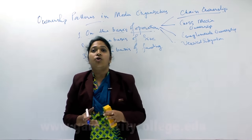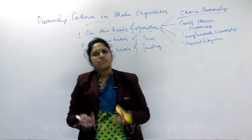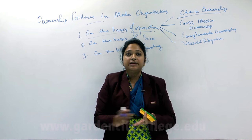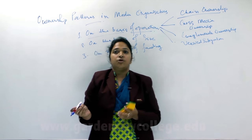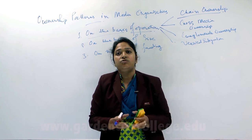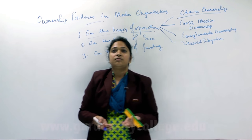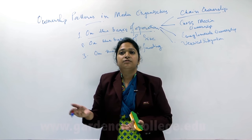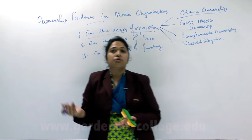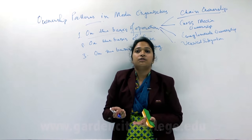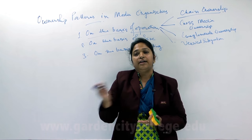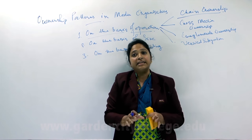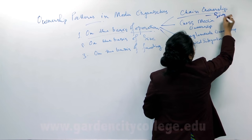In terms of the chain ownership pattern, one owner actually ends up owning a series of newspapers, radio stations, or televisions, and they confine themselves to a single media type. So if someone is into the newspaper business, they will expand their business by purchasing more and more newspapers, but they will not go and purchase a television or a radio station. They confine themselves to a single media type.